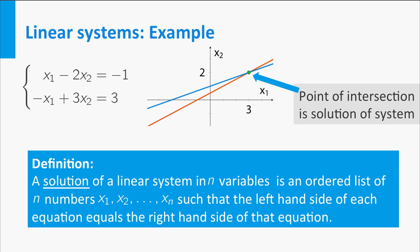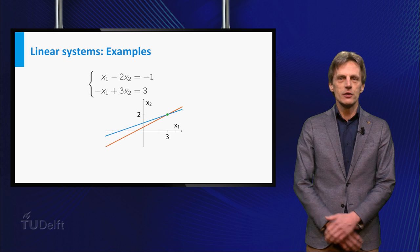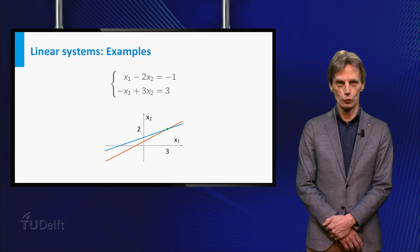In general a solution of a linear system in n unknowns x1, x2 up to xn is an ordered list of n numbers x1, x2 up to xn such that the left hand side of each equation equals the right hand side of that equation. In the previous example the system happens to have precisely one solution.